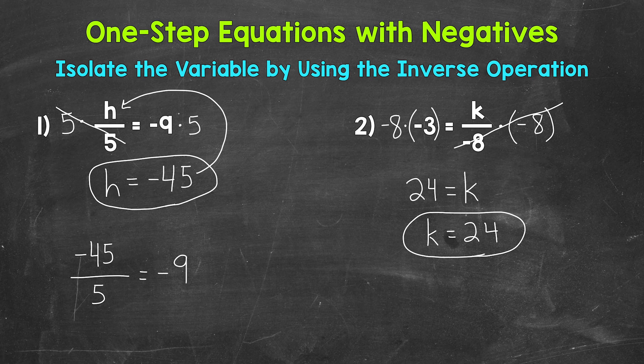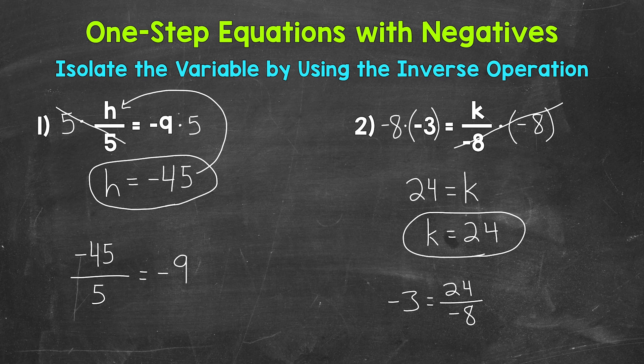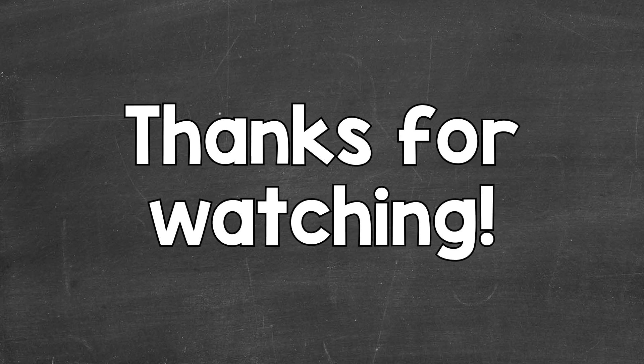Let's check that solution by plugging it into the original equation. We plug in 24 for k: negative 3 equals 24 divided by negative 8. We have a positive divided by a negative, which equals a negative. 24 divided by negative 8 does equal negative 3, so we have the correct solution — k equals 24. That's how you solve one-step division equations with negatives. I hope that helped. Thanks so much for watching. Until next time, peace.